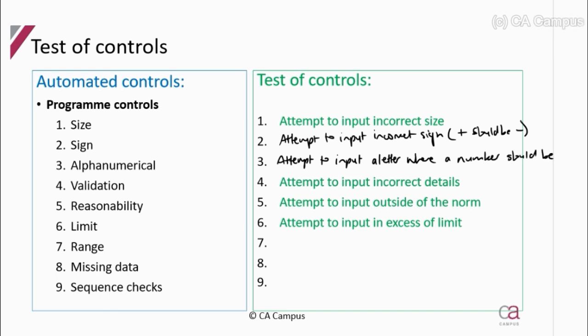You'll need to make assumptions from the question context. For example, if the question mentions inputting an inventory code, you should know that inventory codes are numbers, so you can attempt to put in a letter, which should be rejected. Validation checks the correct details against the master file — attempt to input incorrect details and see that they cannot be validated because those details are not in the master file. A reasonability check ensures information is reasonable relative to system trends — attempt to input information outside of the norm and it should not be accepted.